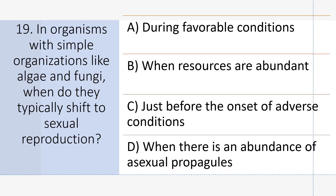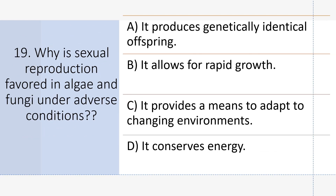In organisms with simple organizations like algae and fungi, when do they typically shift to sexual reproduction? Answer C: Just before the onset of adverse conditions. Why is sexual reproduction favored in algae and fungi under adverse conditions? Answer C: It provides a means to adapt to changing environments.